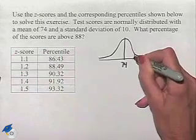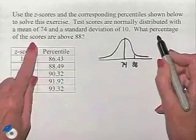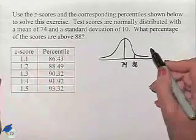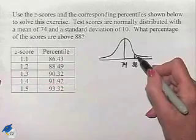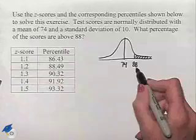Now we want to find the percentage of scores that are above 88. So on our graph, this is going to correspond to the area under the curve to the right of 88.